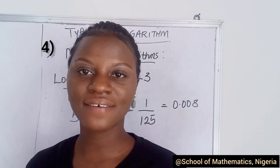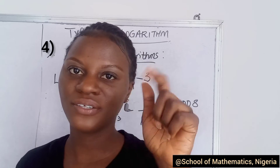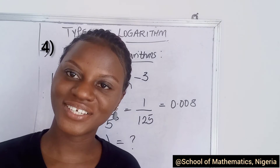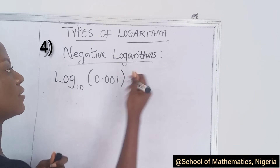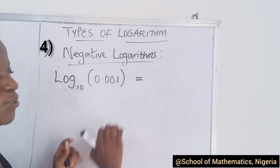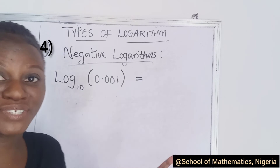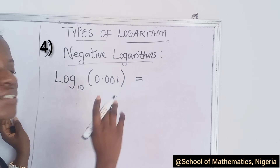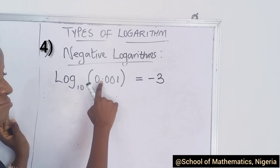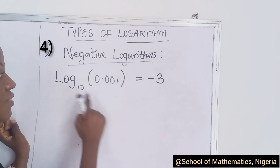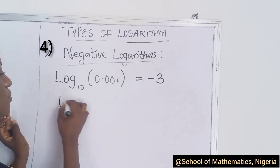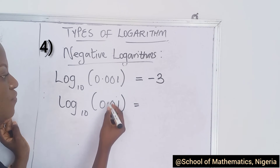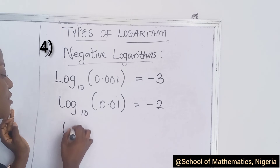Now you know we can have negative logarithms. Let me give an example: log to base 8 of 0.125 — let me know your answer in the comment section below. For anything dealing with base 10, you can count how many places the decimal moves to the first significant number. For example, 0.001 moves 1, 2, 3 places, so the answer is negative 3. And for 0.01, it moves 1, 2 places, so the answer is negative 2.